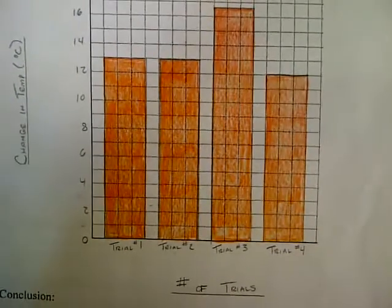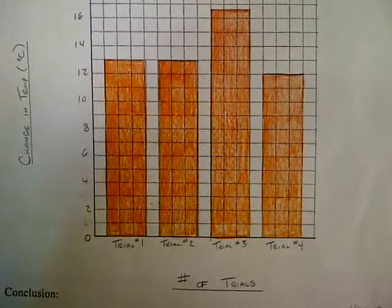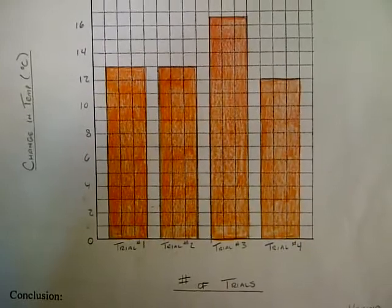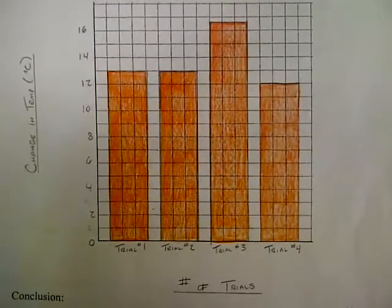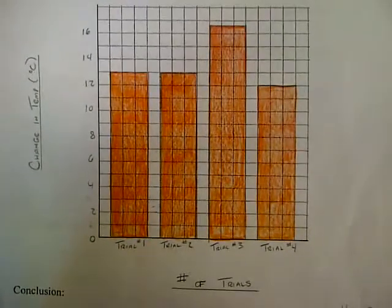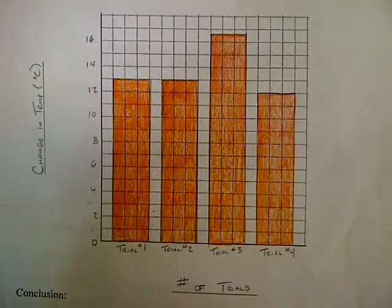To fix the margin of error, when we did our final graph to show all of our data, we graphed the change in temperature rather than the final temperature. For example, trial one had an initial temperature of 22 degrees, whereas trial two had an initial temperature of 21.5. But when we calculated the change in temperature, they came out to the exact same amount of heat gained. So we wanted to show that even though they had a slight difference in initial and final temperature, overall they gained the same amount of heat.